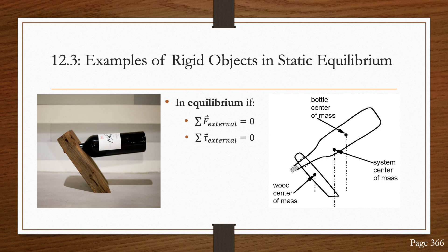Moving on to 12.3, which are examples of rigid objects in static equilibrium. We must remember that for a system to be in equilibrium, the net external force must be zero and the net external torque must also be zero.